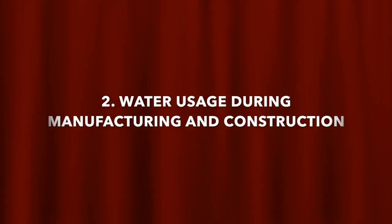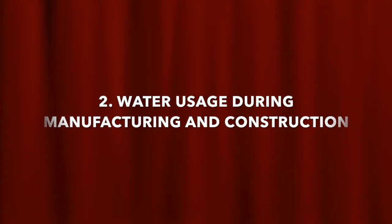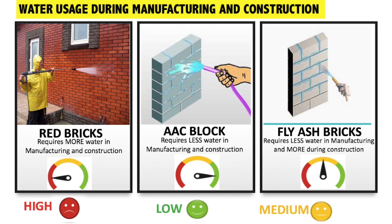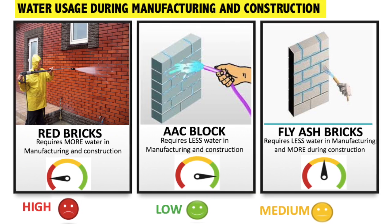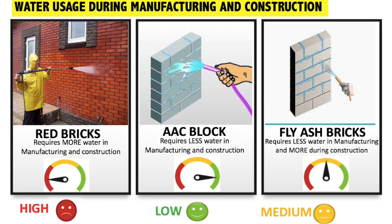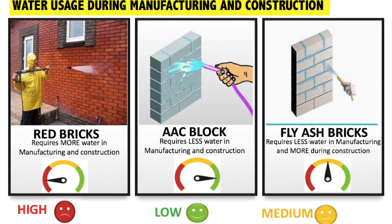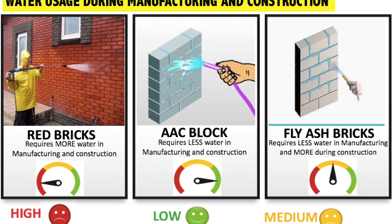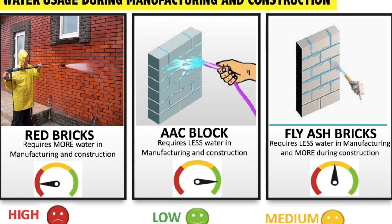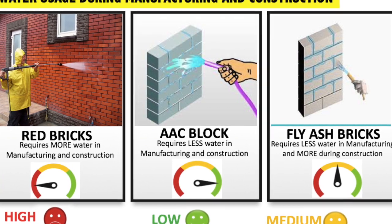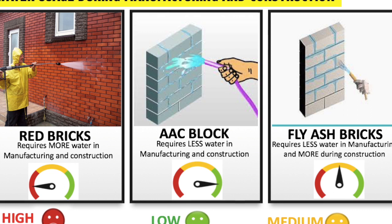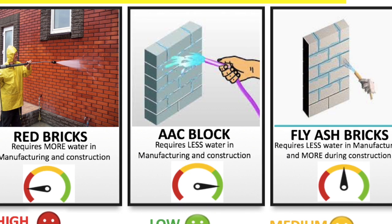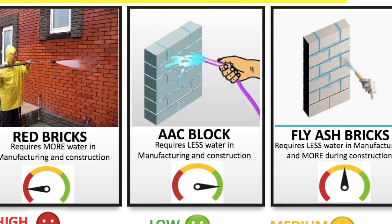Point 2: Water Usage During Manufacturing and Construction. Red bricks require more water for curing and hence there is a high amount of electricity bill and labor cost. AAC blocks are cured by steam and AAC block masonry also requires less water during curing, so there is a saving in electricity bill. Fly ash bricks are cured by steam and thus require less water during manufacturing, but fly ash bricks use water just like red bricks during the masonry work on site.